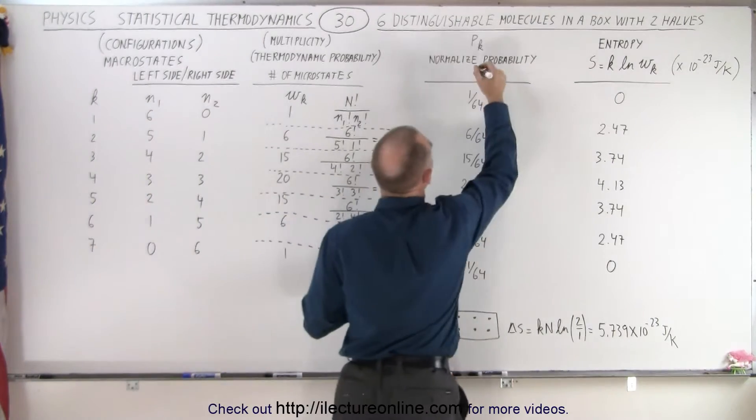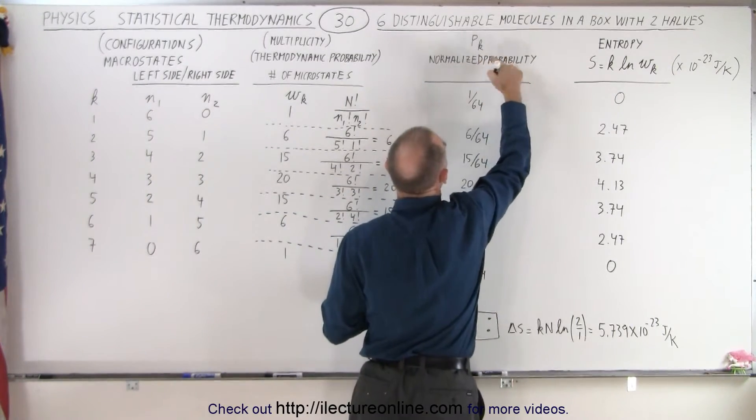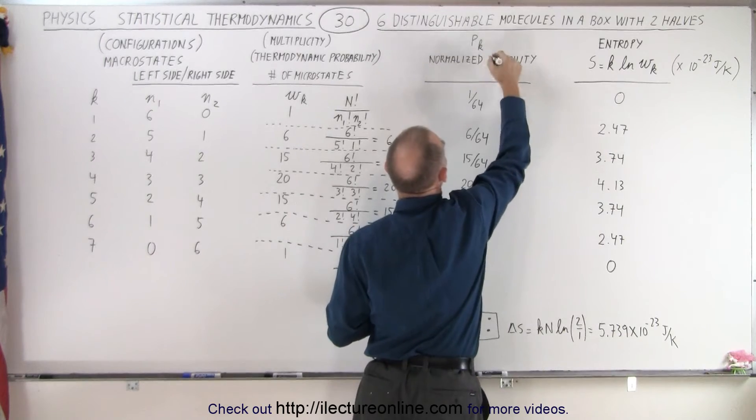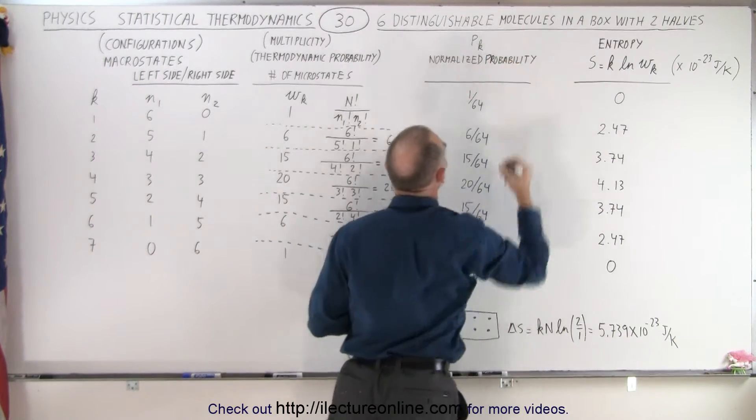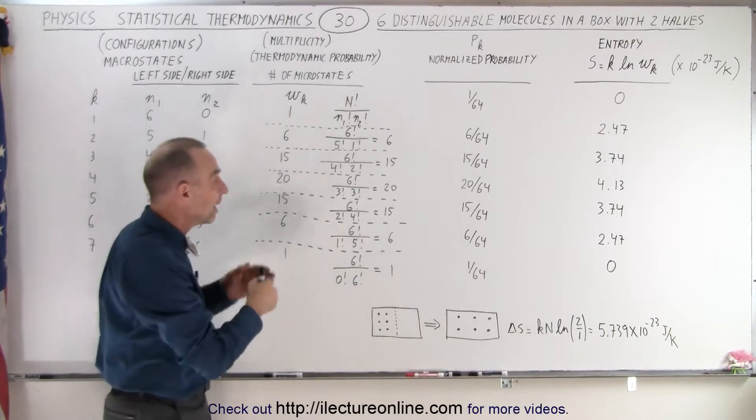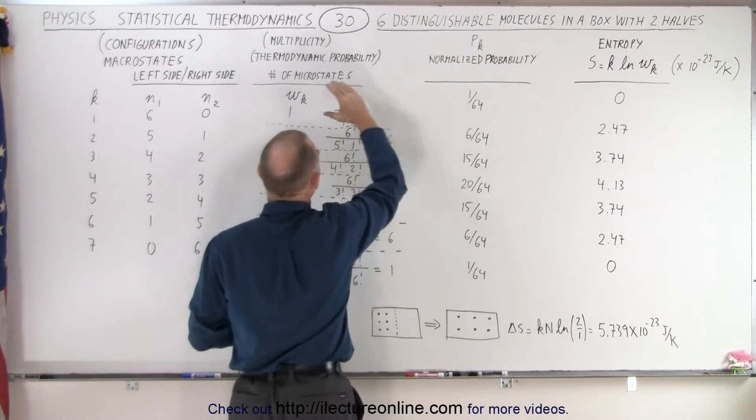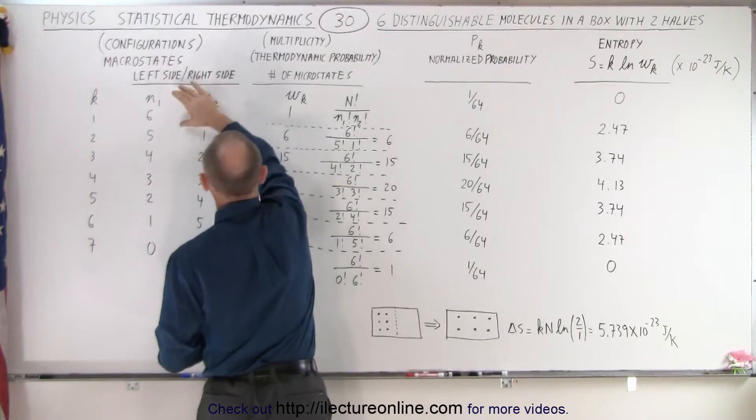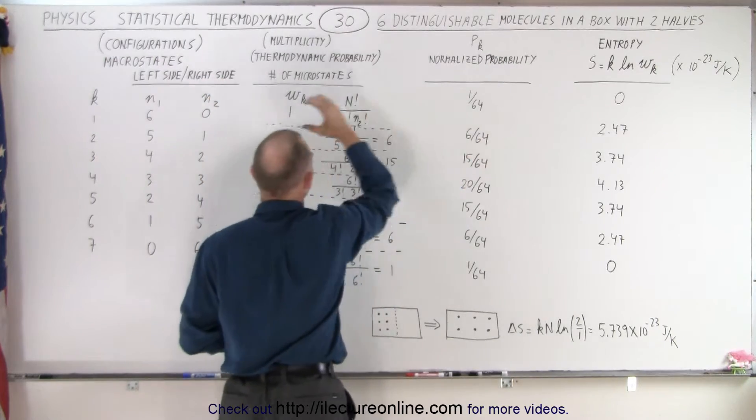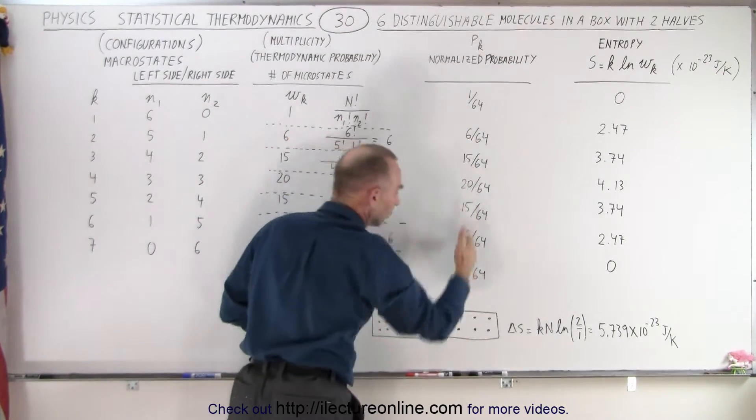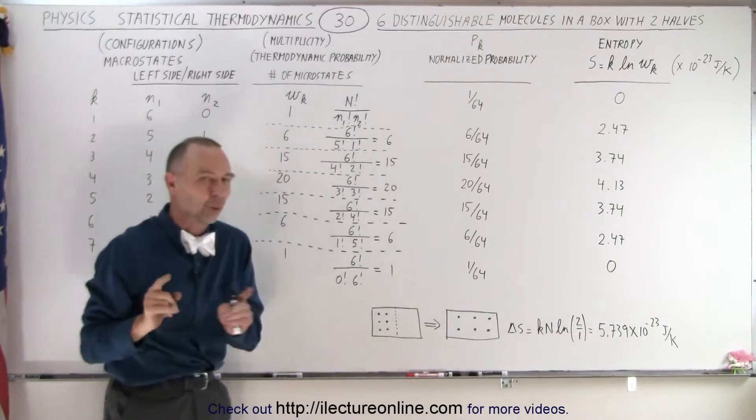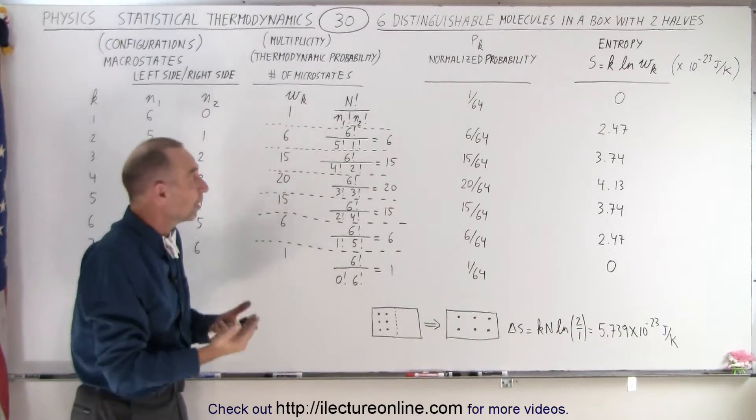Now if we want to talk about the normalized, and of course I forgot a D in there, the normalized probability. There you go. The normalized probability, meaning that if you have the probability that you'll end up in this configuration or this microstate or the probability you end up in this microstate, when you add up all the probabilities together, they should add up to 1. That's why we name it normalized probability.